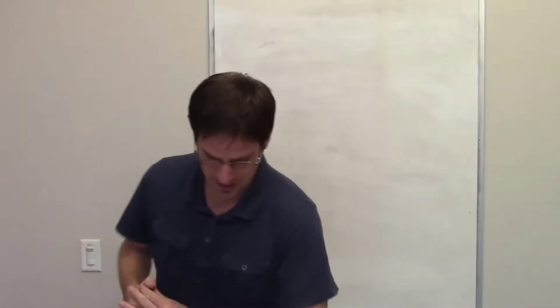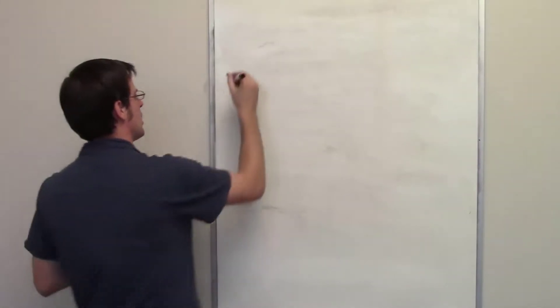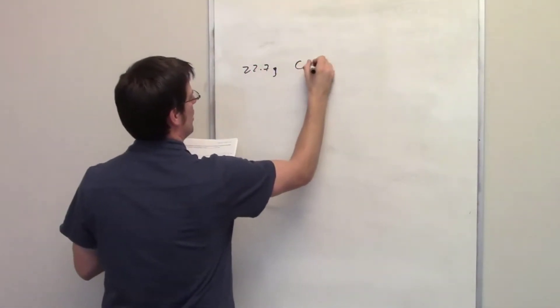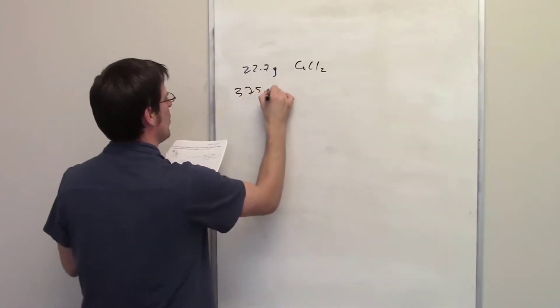This is a fun problem. It tells us that a solution is prepared by dissolving 22.7 grams of calcium chloride in 375 grams of water.